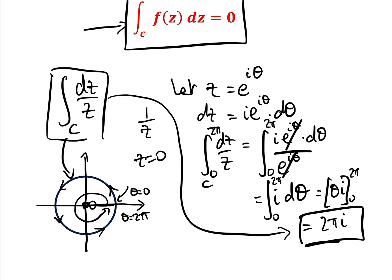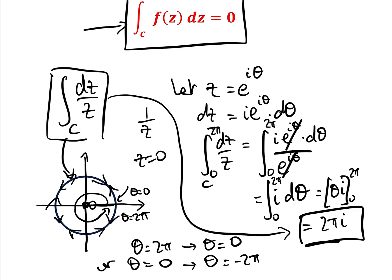That is for anticlockwise traversal. If we go clockwise around the curve, by convention we go from theta equals two pi to theta equals zero, or equivalently from zero to minus two pi. Therefore the integral equals minus two pi i. So it is two pi i anticlockwise and minus two pi i clockwise.